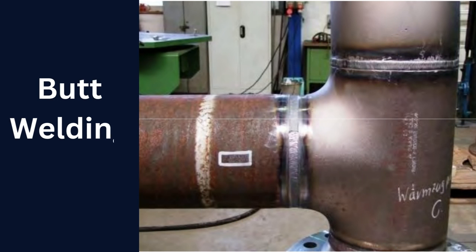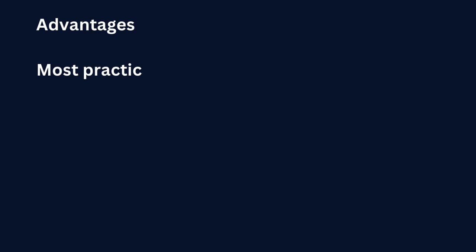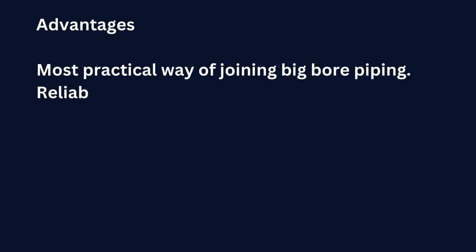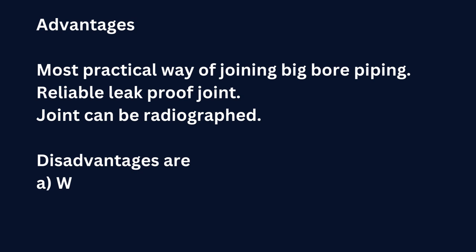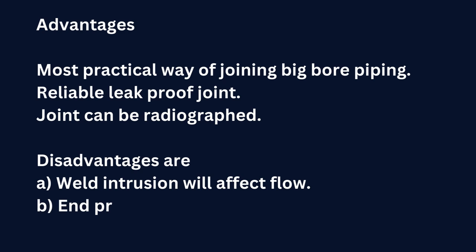Butt weld pipe joints are widely used in industrial practice; here, using the welding electrode, the joint is applied on the external surface. Advantages: most practical way of joining big bore piping; reliable leak-proof joint; joint can be radiographed. Disadvantages: A. weld intrusion will affect flow; B. end preparation is necessary.